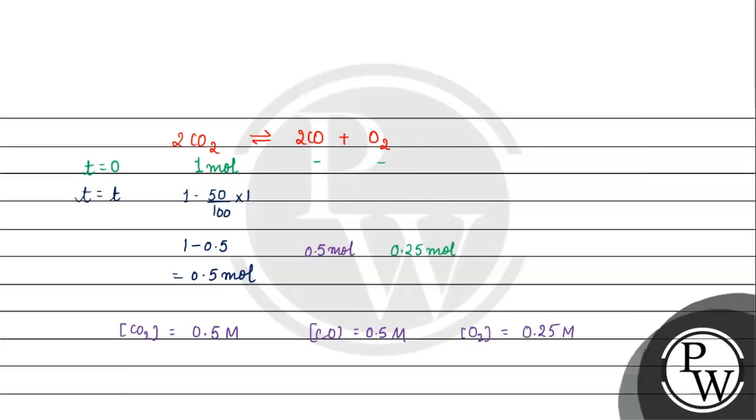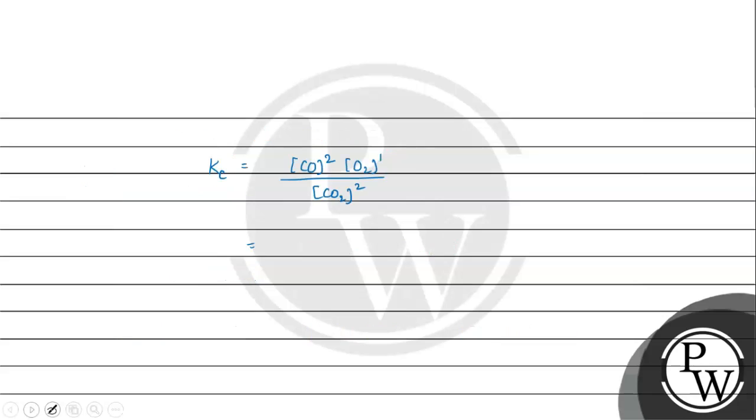The concentration of carbon monoxide is 0.5 molar raised to the power 2. Oxygen concentration is 0.25 molar. Carbon dioxide concentration is 0.5 molar.